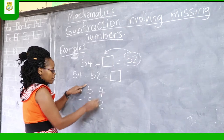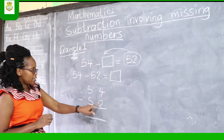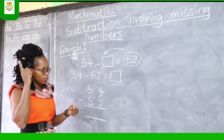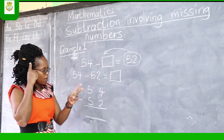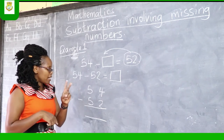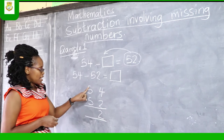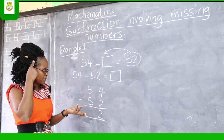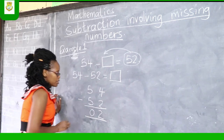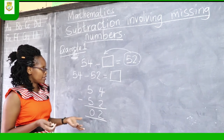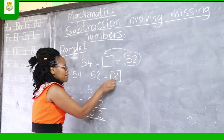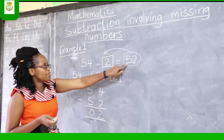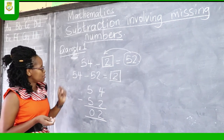Here is the tens column and here is the ones column. Let's start with the ones column: 4 take away 2. When we are taking away, we use our fingers. Starting at 2, count up: 3, 4. At the count of 4 we stop, and the answer is right on our fingers — the answer is 2. Write 2 in the ones column. Then go to the tens column: 5 take away 5. There is nothing to be taken away, so 5 take away 5 gives us 0. Our answer is 2, and 0 is not necessary to write. So we write 2 in the missing box. This means that 54 take away 2 gives us 52, and that is how we work this kind of question.